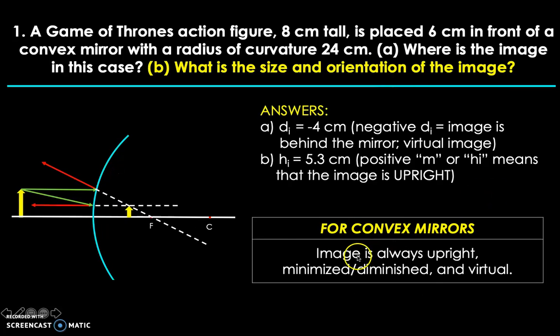In fact, for convex mirrors, the image is always upright, minimized or diminished, and virtual, as evidenced also in this particular ray diagram. Although the level of getting minimized would vary depending on where you exactly place the object. So in this ray diagram for convex mirror, we can also see that the image is upright. It's minimized or smaller than the actual object. And it's virtual because it's located behind the mirror and it's not formed by actual light rays. These are just projections of the brain itself, thinking that light always follows a straight line path.